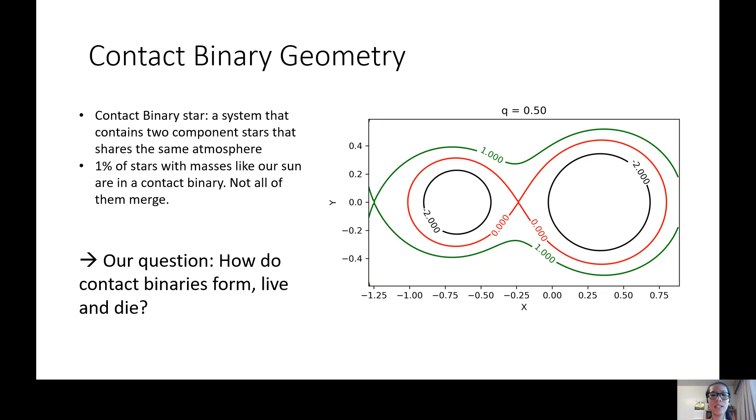A contact binary star is a system that contains two component stars orbiting so close that they share the same atmosphere. As you can see in the picture, at value negative 2, both stars have their own individual space.